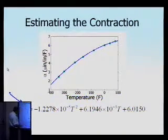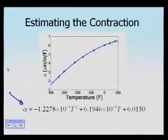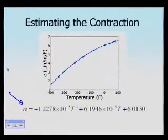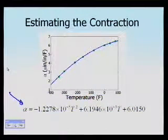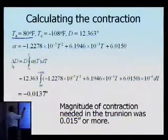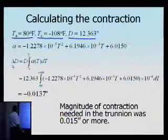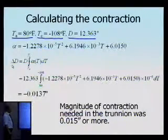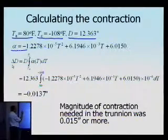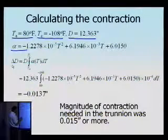Now that we know what alpha is, we can substitute the second-order polynomial into our integral formula to find how much contraction is taking place. As you can see, the second-order polynomial regression does a good job of approximating the data visually. Recapping: room temperature is 80 degrees Fahrenheit, dry ice and alcohol temperature is minus 108 degrees Fahrenheit, and the outside diameter of the trunnion is 12.363 inches. We calculated alpha as a second-order polynomial by regressing the eight data points.